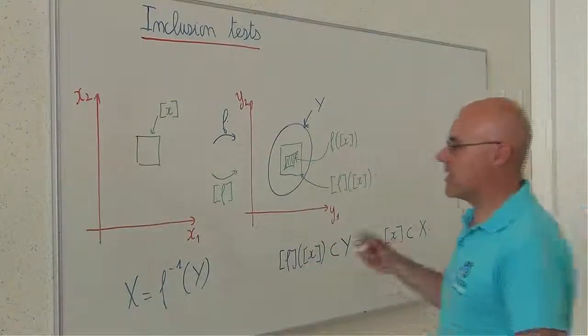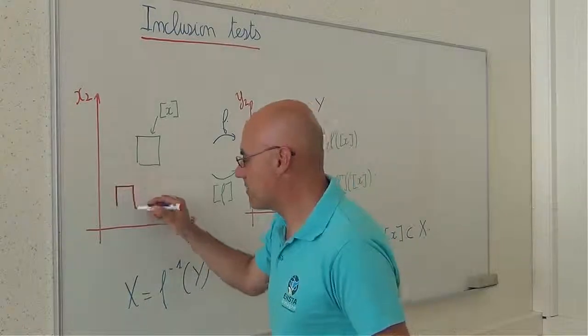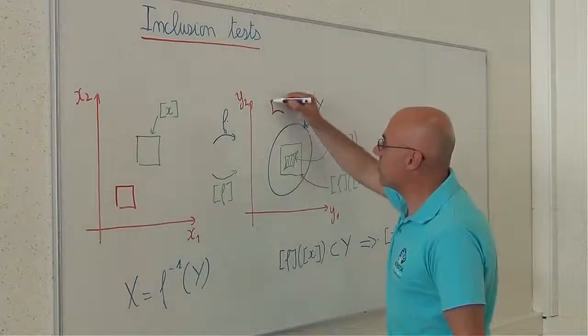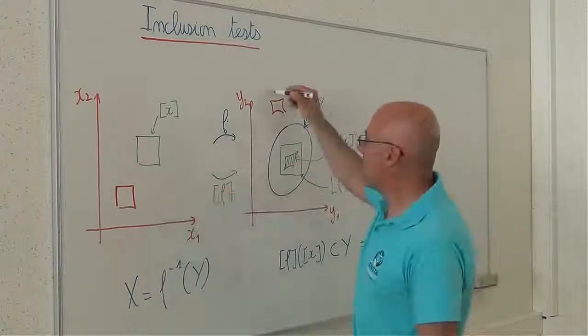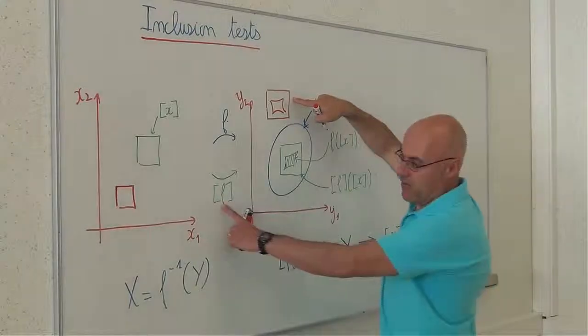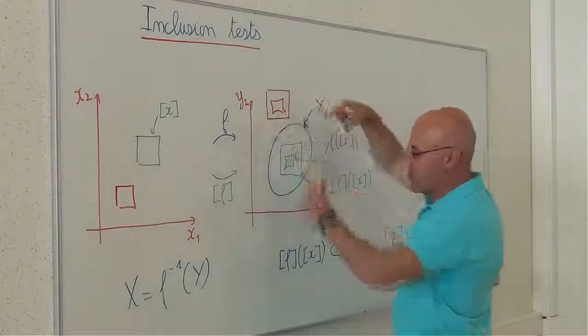In the same manner, if I take this box, if I compute this image, I am not able to compute it directly, but I am able to compute the box via the inclusion function which encloses this image.